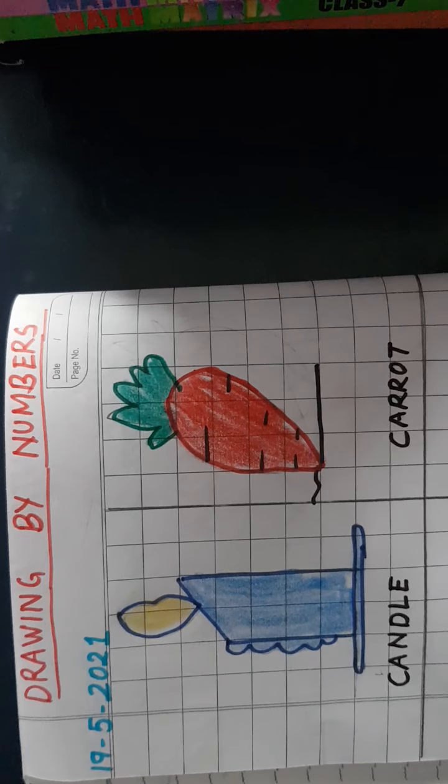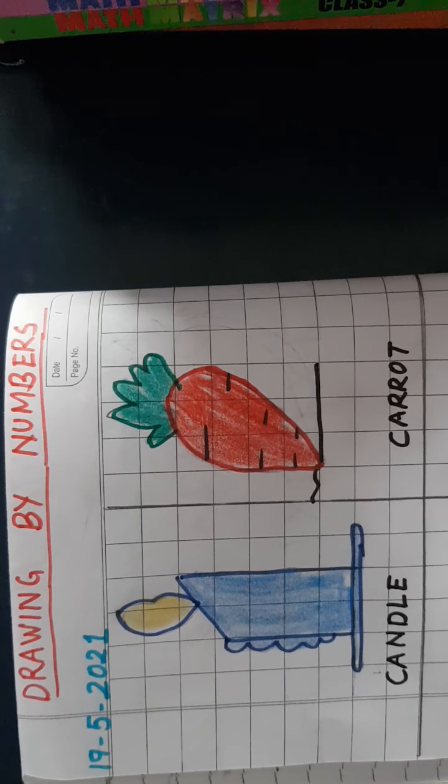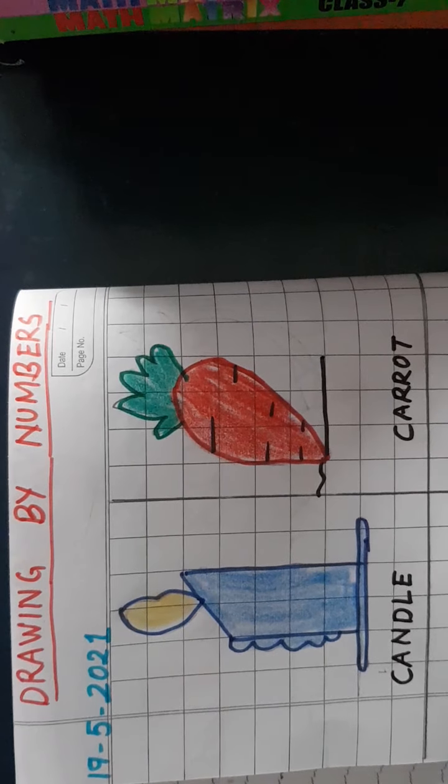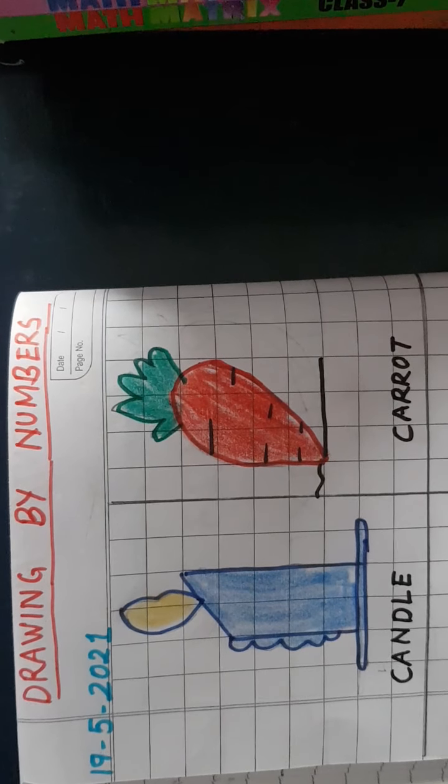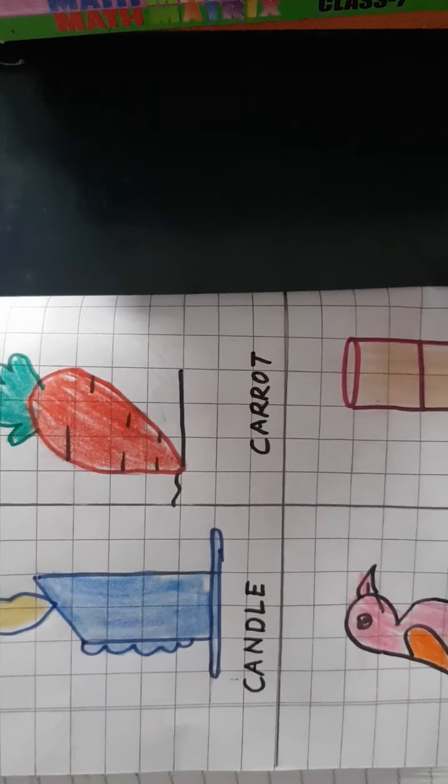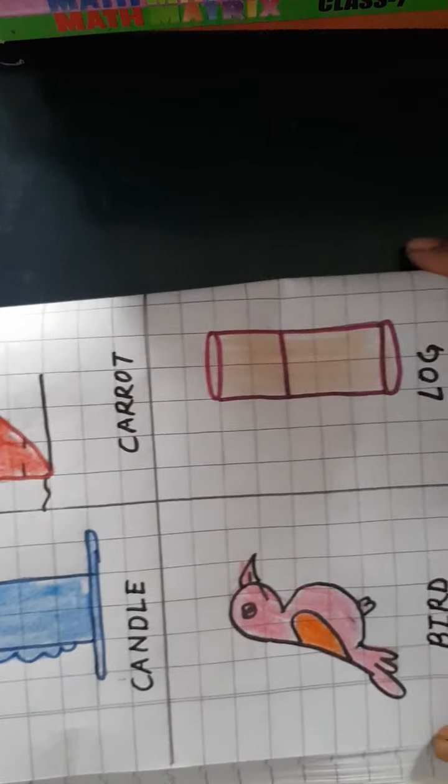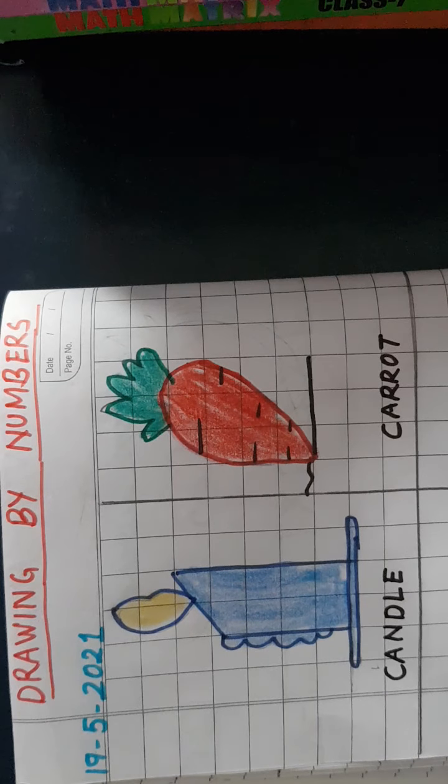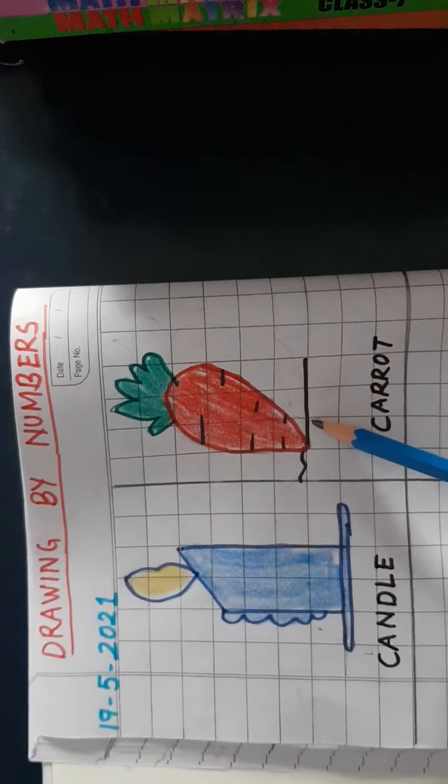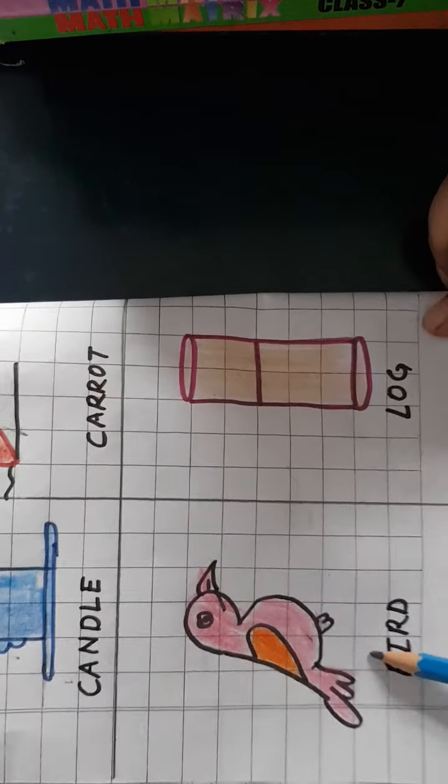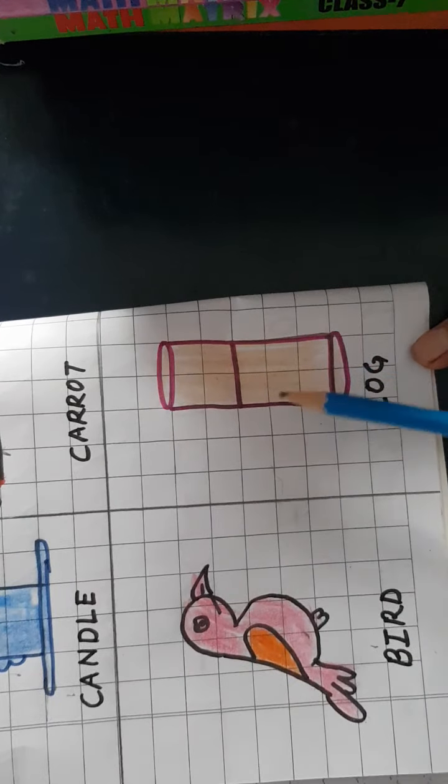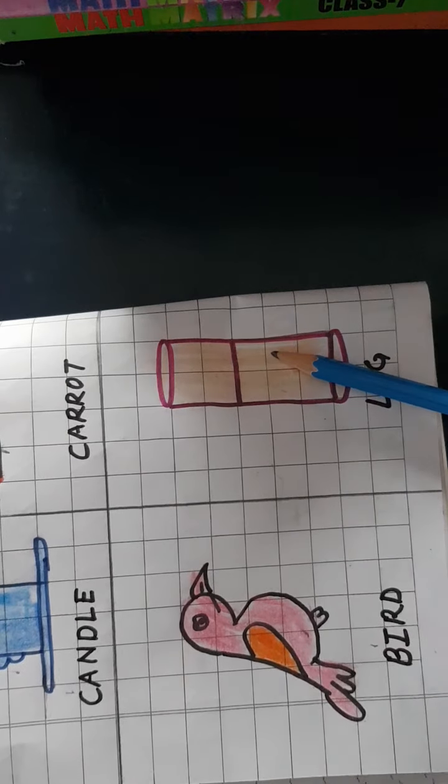See how beautiful pictures are ready using only numbers. So I hope that you liked the video. You can draw a candle from number 1, carrot from number 2, a bird from number 3, and a log from number 4. Thank you and have a nice day, bye bye.